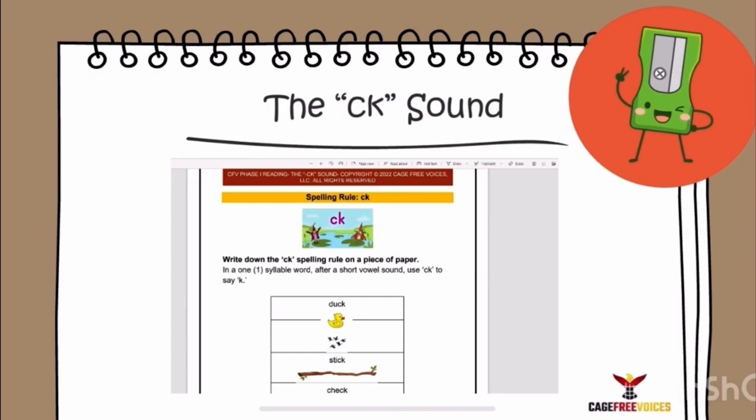That's right! We're going to write down the CK spelling rule on a piece of paper. So I'll start off first. In a one-syllable word after a short vowel sound, use CK to say K.